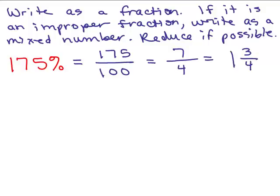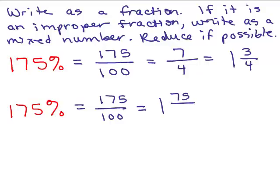That's not the only way you could have done this. You could have started off the same way, 175 over 100, and you could have first changed it to a mixed number. So 175 divided by 100, that goes in once, 75 left over. So it's 1 and 75 hundredths. So 25 goes into both of these numbers. 75 divided by 25 is 3, and 100 divided by 25 is 4. So notice you're still going to get 1 and 3 fourths.